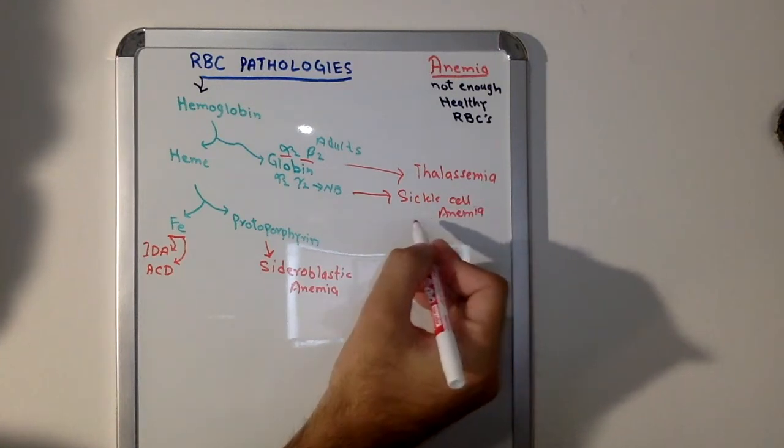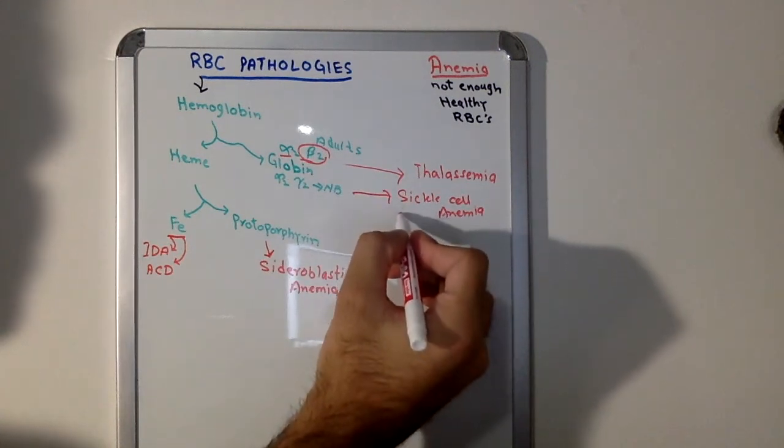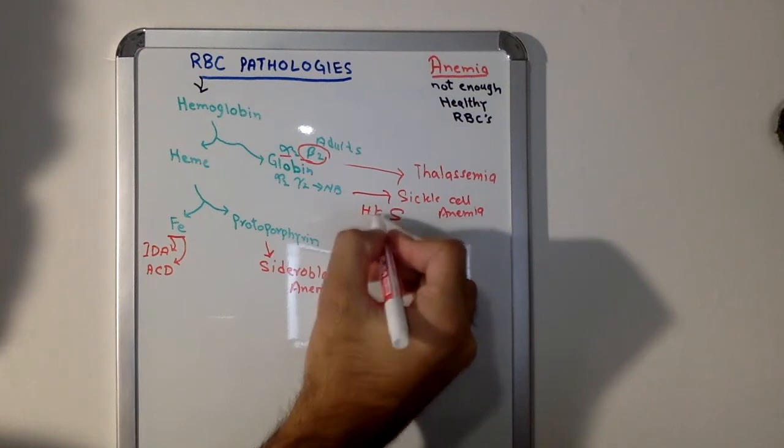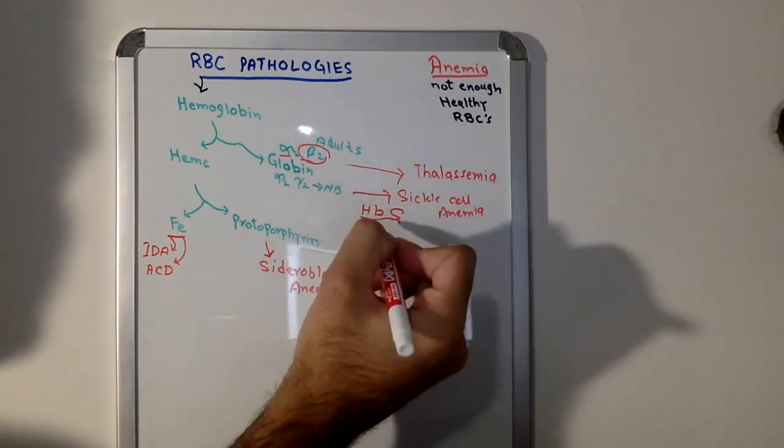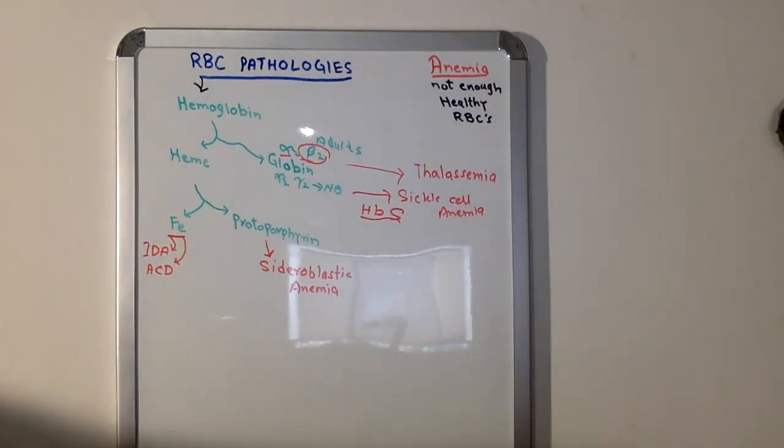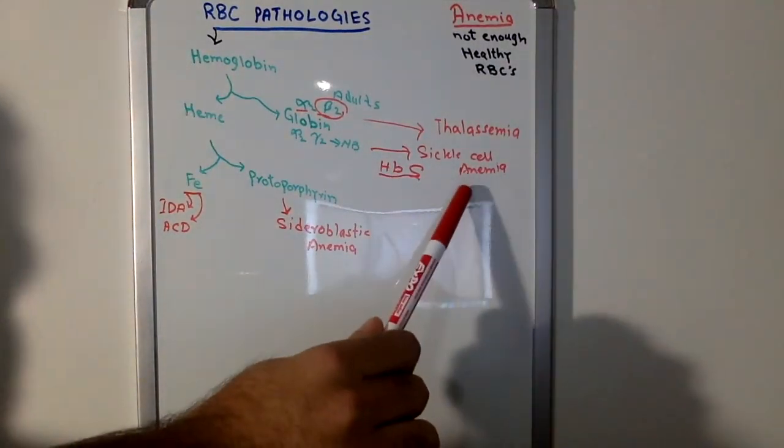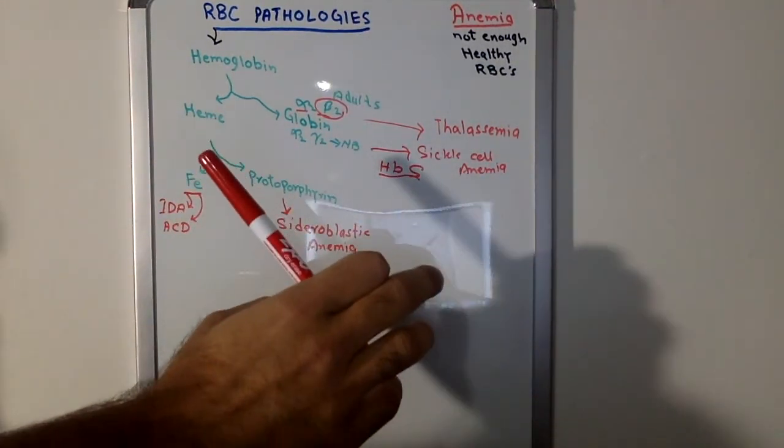The other one we have is sickle cell anemia. What happens in sickle cell anemia, the beta chain gets replaced by a mutant S. So it's HbS. Sickle cell anemia, so pretty much covered all the anemias here.